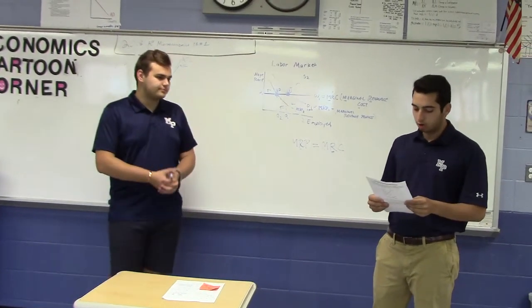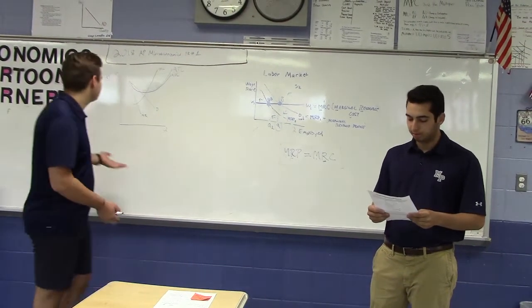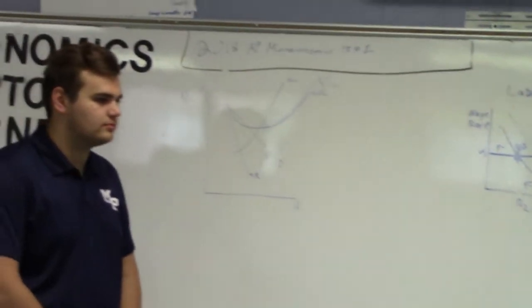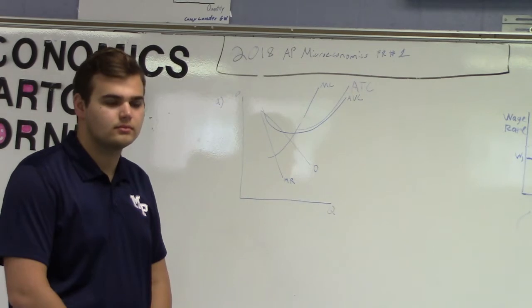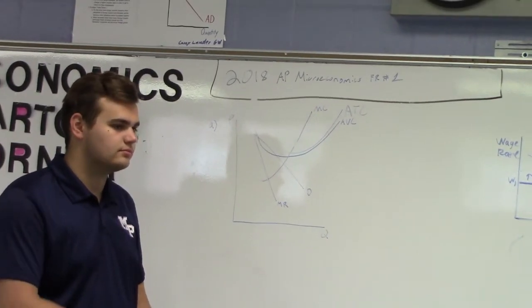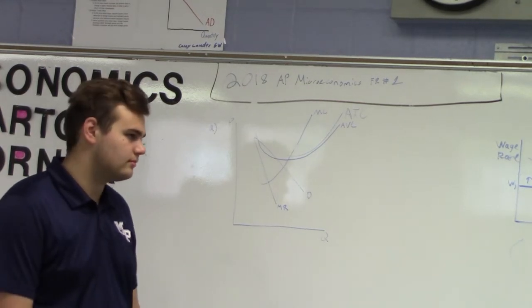Part A: Draw a correctly labeled graph per single cinema showing the profit-maximizing price and quantity of tickets labeled as PM and QM respectively, and the area representing the negative economic profit shaded completely.